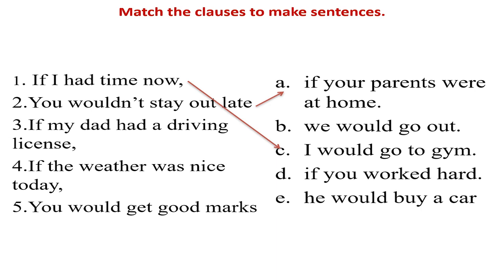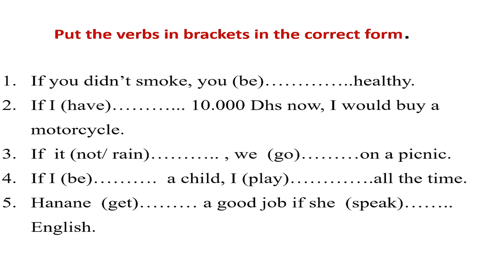Number three: 'If my dad had a driving license, he would buy a car.' Number four: 'If the weather was nice today, we would go out.' Number five: 'You would get good marks if you worked hard.' For example, this person is telling a friend who is not working well: 'You would get good marks if you worked hard.'